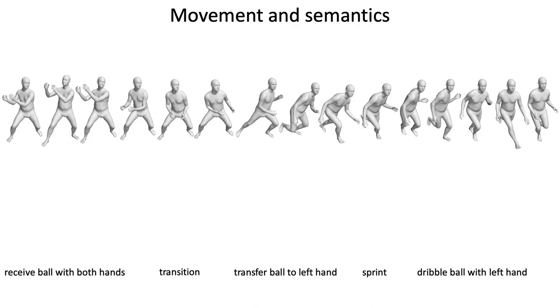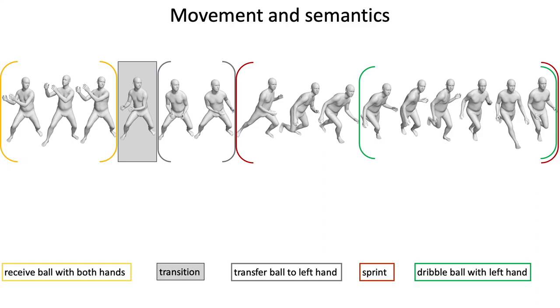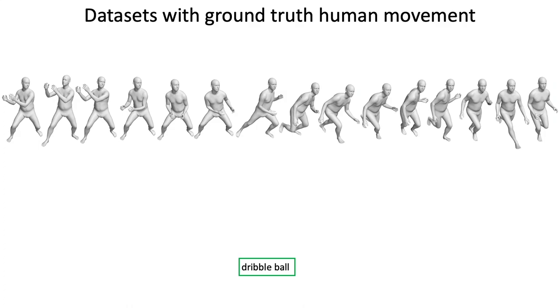For tasks like action synthesis or action recognition with natural human movements, it is critical to have high quality 3D movement data where each frame is labeled with all the actions that are happening.